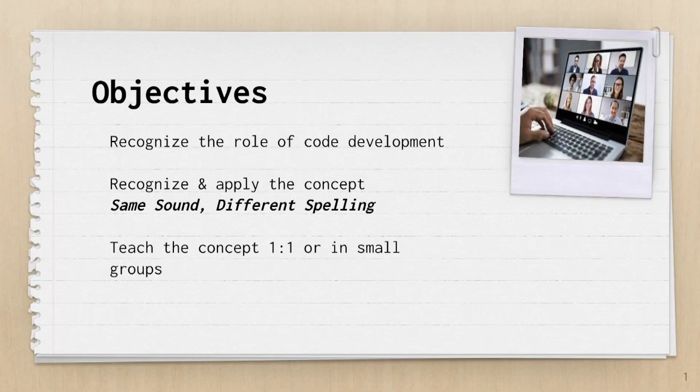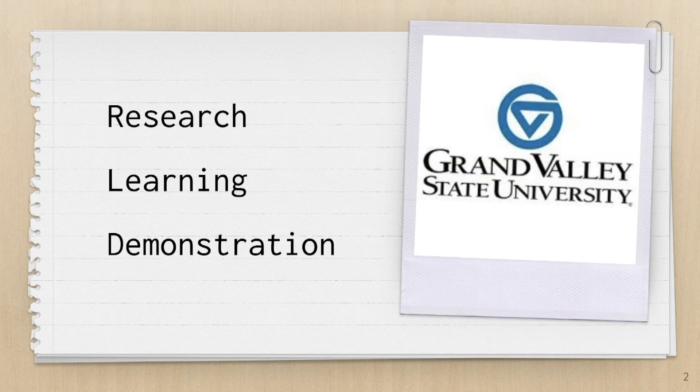Teachers need to utilize all three code complexities for effective literacy instruction. Let's talk about the objectives of this webinar. The first objective is to recognize the role of code development, recognize and apply the concept of same sound different spelling, and how to teach this code complexity in a one-on-one, small group, or whole group session. We're going to talk about research, learning, and demonstration — that's the same format we have followed in past Laker Lessons.